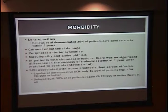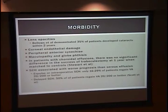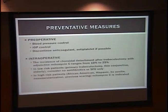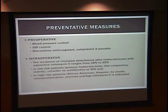Suprachoroidal hemorrhage is associated with the worst prognosis, and the prognosis depends on the timing. Expulsive or intraoperative suprachoroidal hemorrhage is associated with worse visual prognosis than delayed suprachoroidal hemorrhage. Preventative measures include blood pressure and IOP control prior to surgery, and discontinuation of anticoagulants and antiplatelets if possible. Intraoperatively, in patients undergoing trabeculectomy, there is a higher incidence of choroidal detachment with antifibrotics.